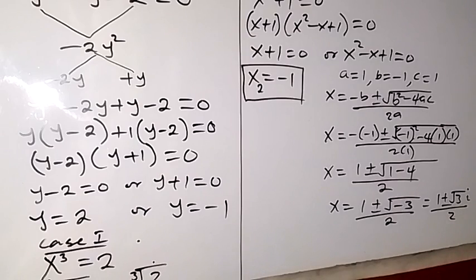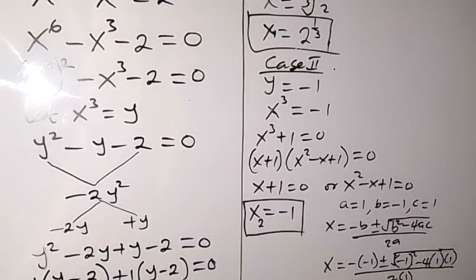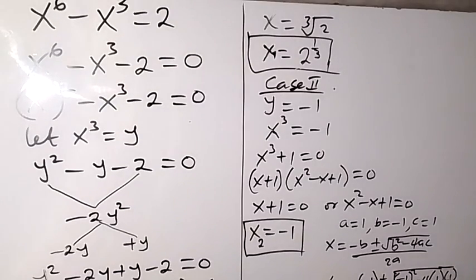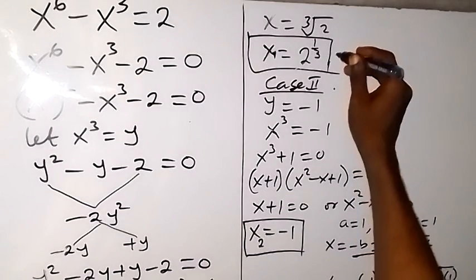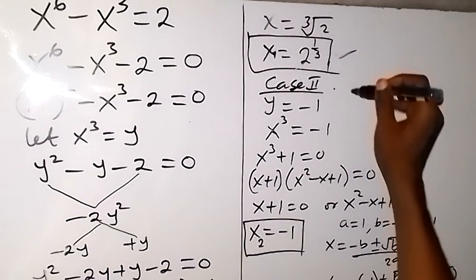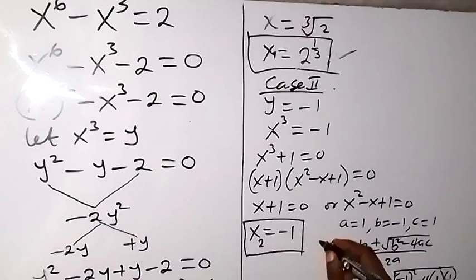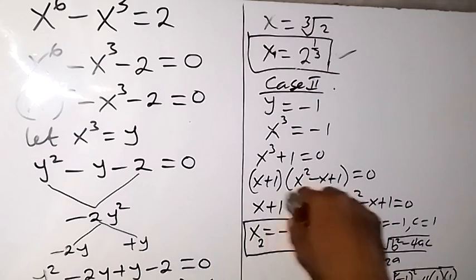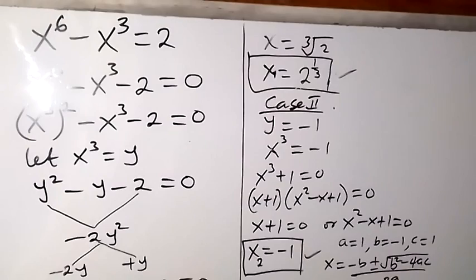So the two solutions we have here give us: the first one, x equals to 2 raised to power 1 over 3, and the second solution, x equals to minus 1. Then we can check from what we were given to confirm the solutions.